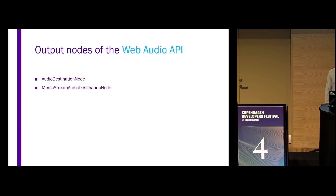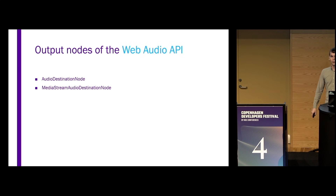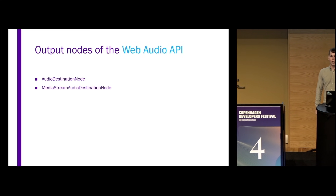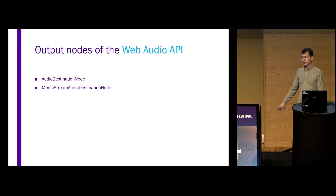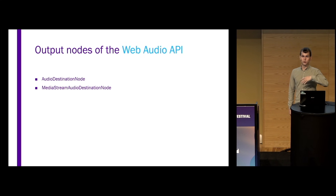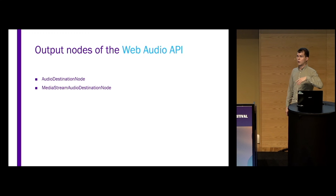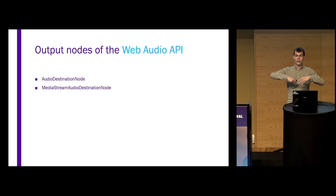And then there are a few ways to output sound. You can output it to the speaker — that's the audio destination node. Or you can output it to a media stream, for example to record it or pass it over the internet to some other device.